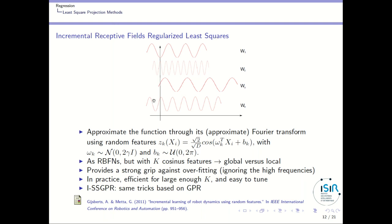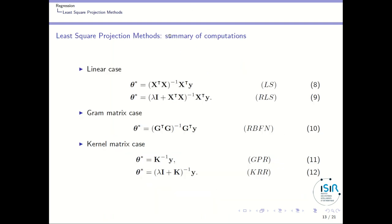There is also ESS-GPR, which is more or less the same as IRF-RLS but based on Gaussian process regression, and as noted, GPR is very similar to kernel ridge regression. To summarize, in the linear case you have the standard and regularized formulas. For RBFN you use a Gram matrix instead of just the design matrix. For kernel regularized least squares you use a specific formula, and for Gaussian process regression you remove the regularization term.